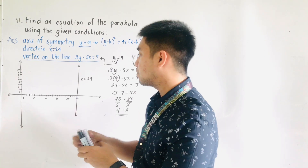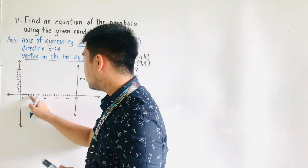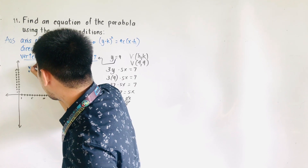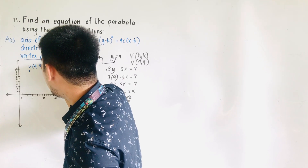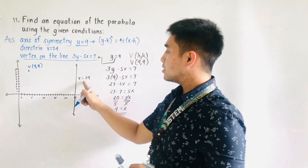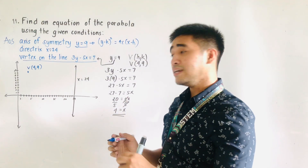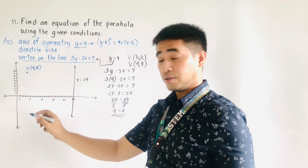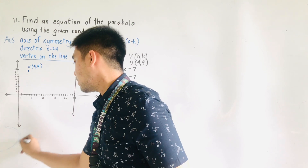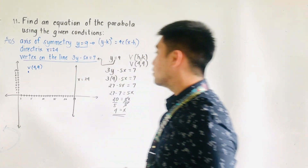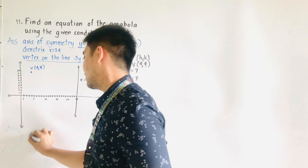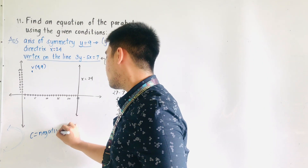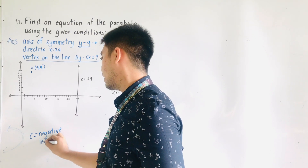Let us graph the vertex at (4, 9). This is the location of the vertex at 4 and 9. Since the directrix is x equals 24, we can now say that our parabola is opening to the left. And if our parabola is opening to the left, therefore our c is negative.